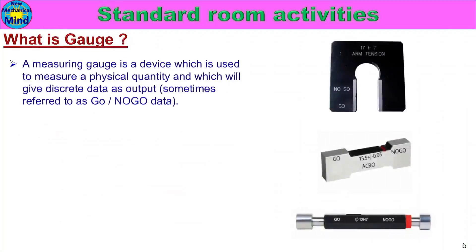What is Gauge? A measuring gauge is a device which is used to measure a physical quantity and which will give discrete data as output — sometimes referred to as go or no-go data. The gauge measures whether a product's physical quantity is okay or not okay. This is the gauge definition.